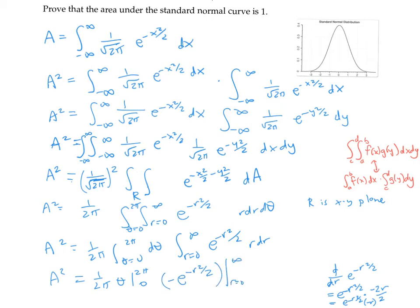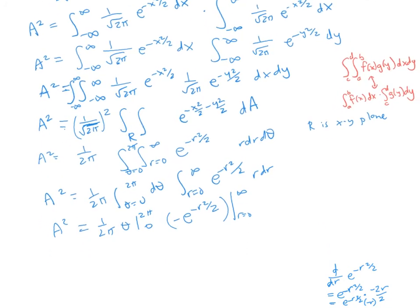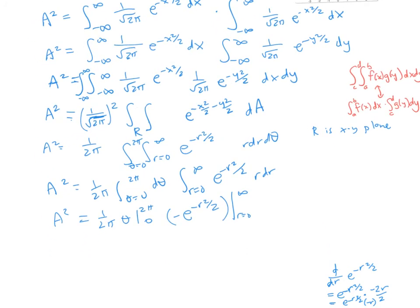Okay, now I'm being a little sloppy when I write my bound as infinity—you can't really evaluate infinity. What this really means is I'm doing the limit as t goes to infinity of minus e to the minus r squared over 2 between t and zero. The first bit of my expression for area squared is just 1 over 2π times 2π minus zero. So that actually cancels out to just one.